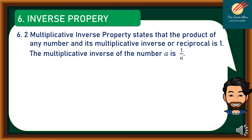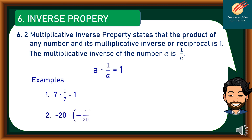The second type of inverse property is the multiplicative inverse: the product of any number and its multiplicative inverse or reciprocal is 1. The multiplicative inverse of a number a is 1 over a. In symbols, a times (1/a) equals 1. Examples: 7 times 1/7 equals 1; negative 20 times negative 1/20 equals 1; 4/5 times its reciprocal 5/4 equals 1; and 7/11 times its reciprocal 11/7 equals 1.